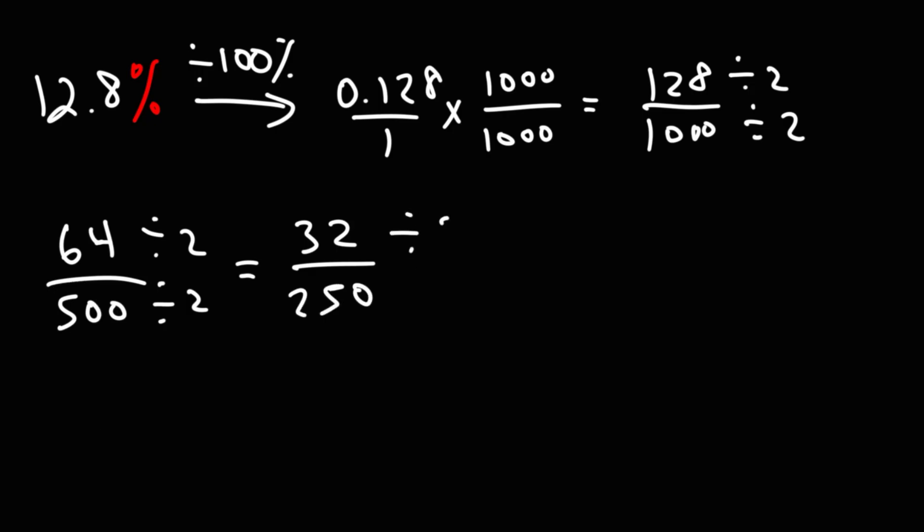Now we still have even numbers. So we can divide by 2 again. 32 divided by 2 is 16. And 250 divided by 2: 2 divided by 2 is 1, 50 divided by 2 is 25. So we get 125. And at this point, we can't simplify any further. So 12.8% is 16 over 125 as a fraction.